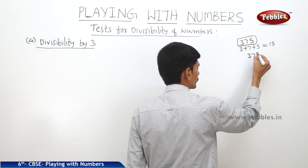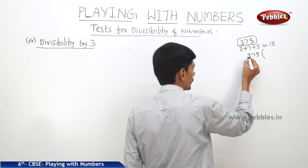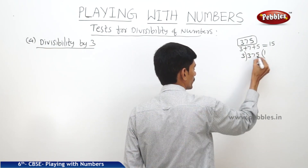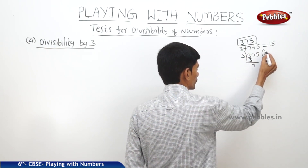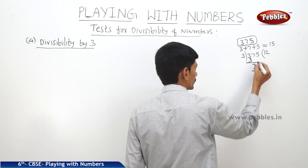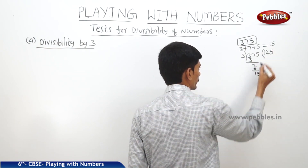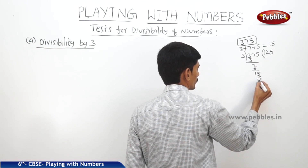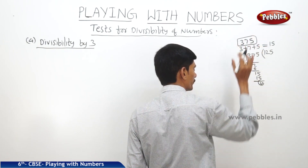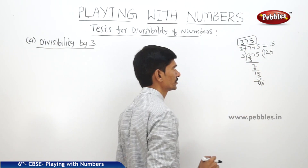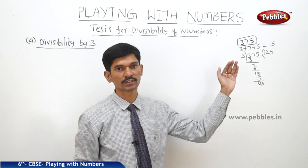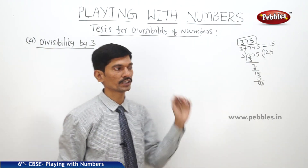Let us verify that 375 is divisible by 3: 3 times 125 gives 375 with remainder 0. So if the sum of the digits of the given number is divisible by 3, then the given number is divisible by 3.